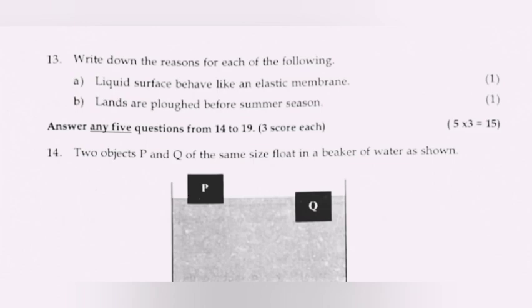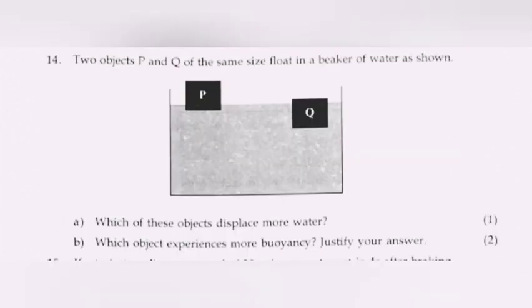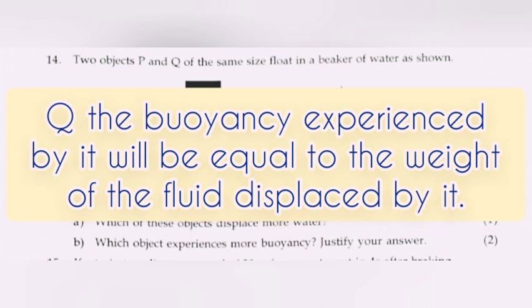Question 14: Two objects P and Q of the same size float in a beaker of water as shown. (a) Which of these objects displaces more water? Answer: Q. (b) Which object experiences more buoyancy? Justify your answer. Answer: Q. The buoyancy experienced by it will be equal to the weight of the fluid displaced by it.